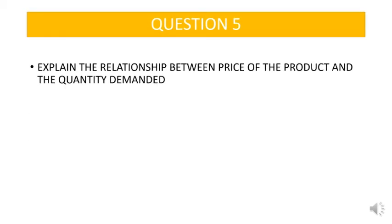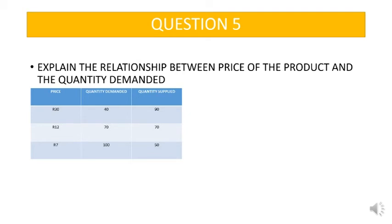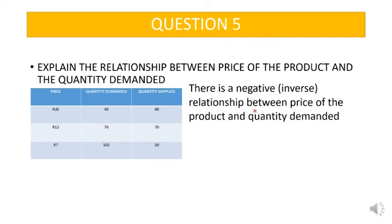Question 5: explain the relationship between the price of the product and the quantity demanded. Using the table, when the price is high, the quantity demanded is low; but when the price is low, the quantity demanded is high. So there is a negative or inverse relationship between the price of the product and the quantity demanded.